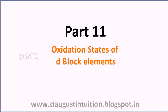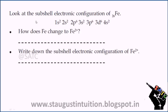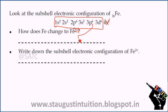In the oxidation state, in Class 10 Chemistry, Periodic Table and Electronic Configuration Part 11. First of all, look at the sub-shell electronic configuration of Fe. This is Fe — sub-shell electronic configuration, atomic number 26. How does Fe change to Fe2+? 2+ means 2 electrons are lost. Write down the sub-shell electronic configuration of Fe2+.